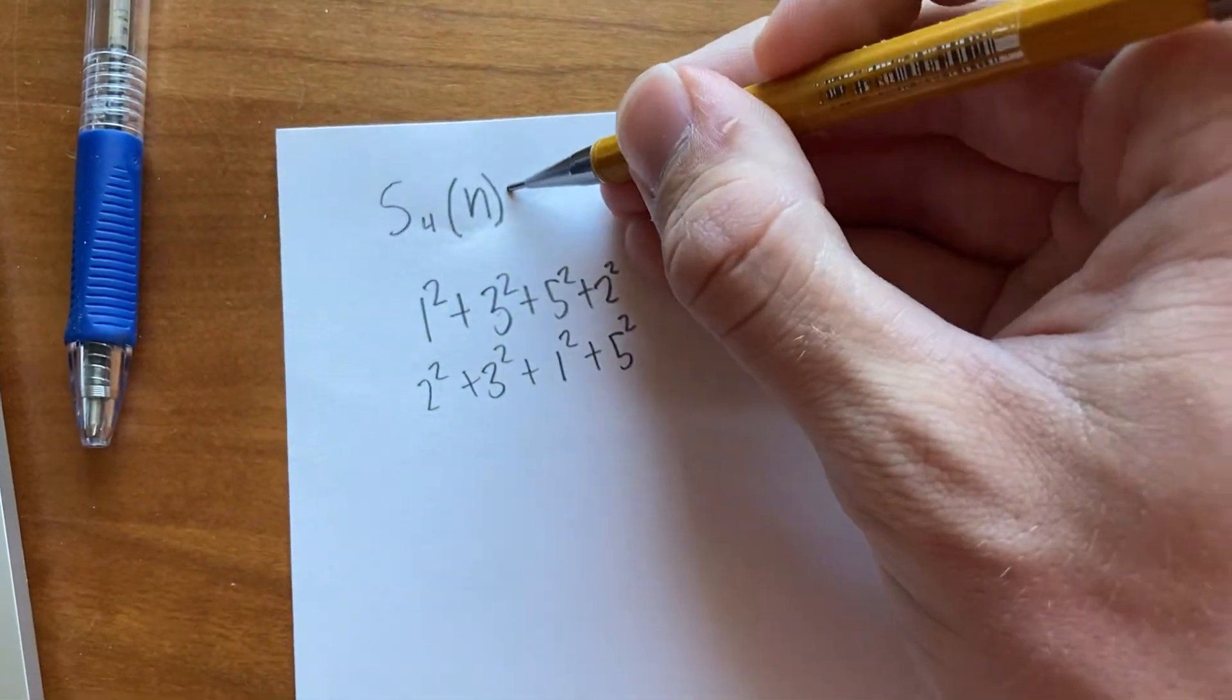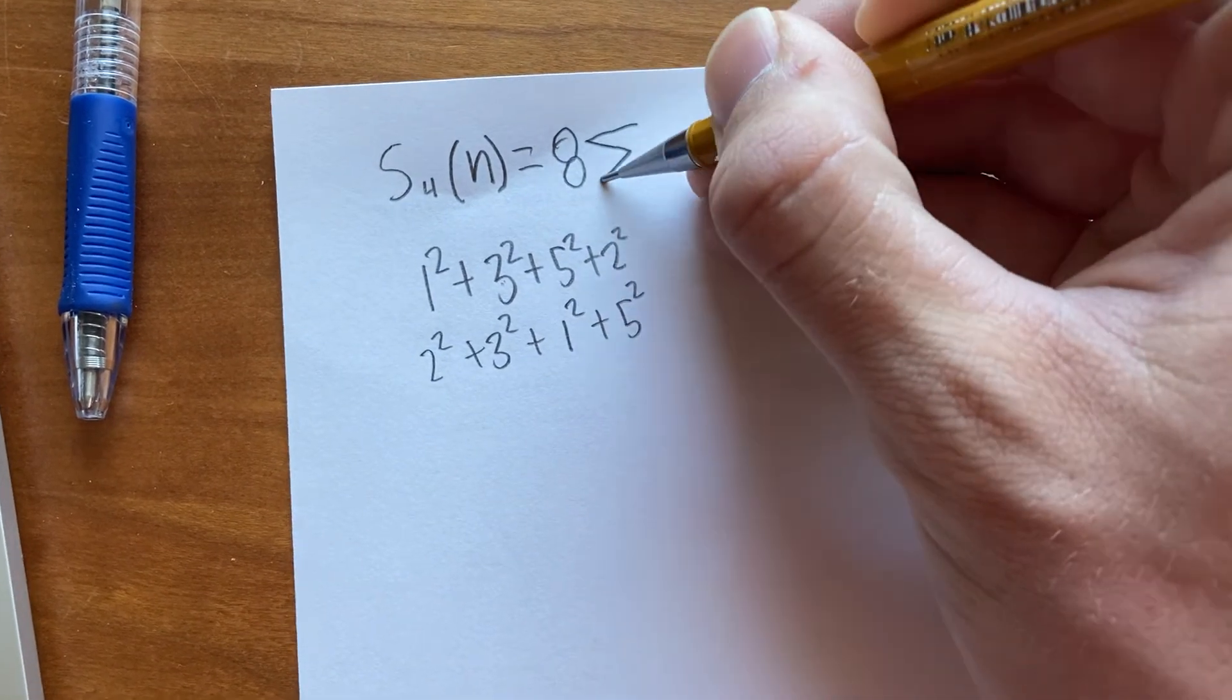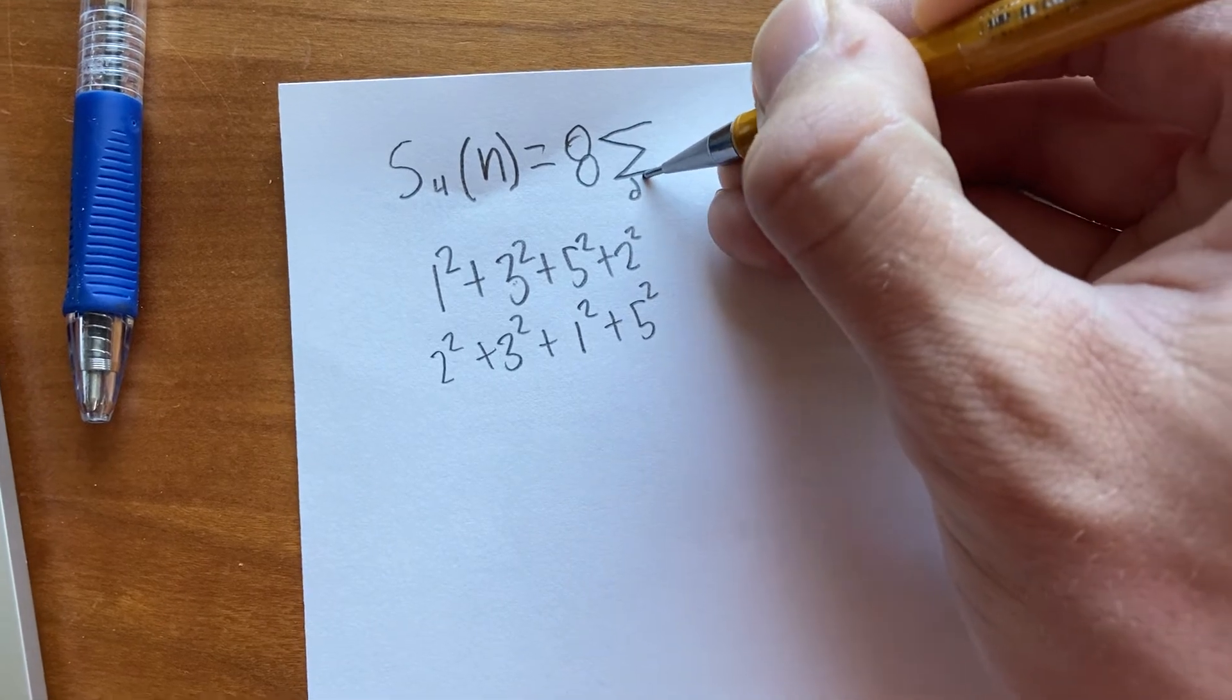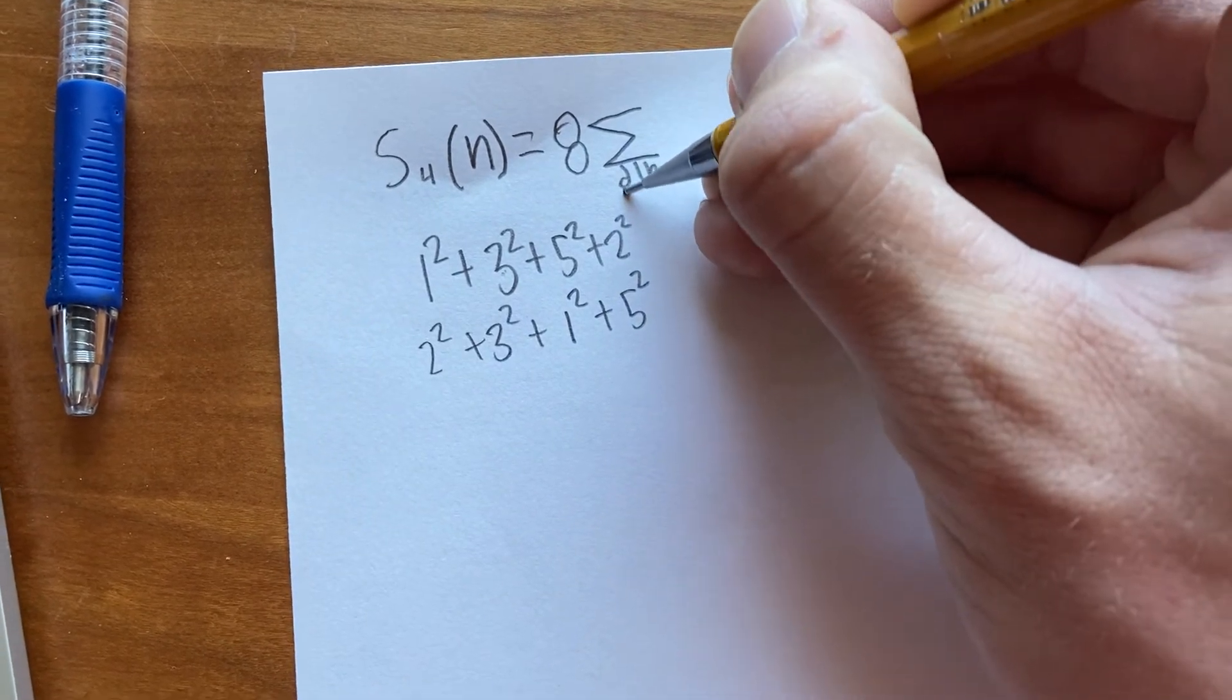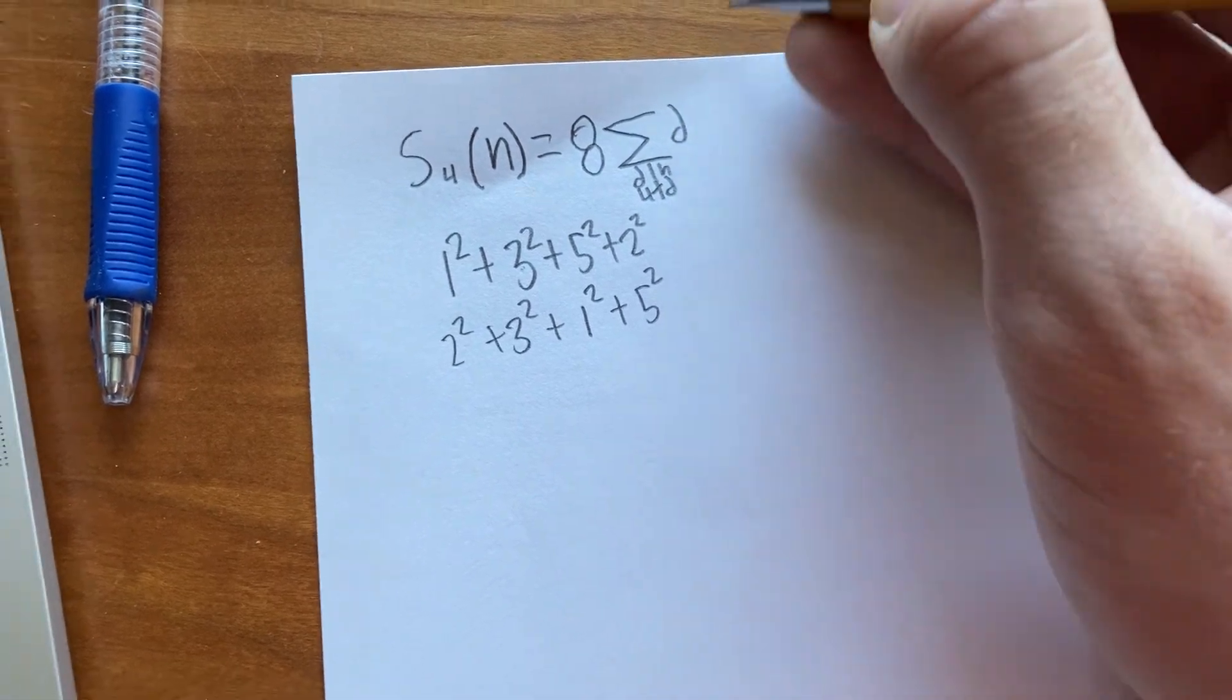Anyway, so the formula, which I just found, it's amazing how simple it is. You just take eight times the sum over all the divisors of n that are not multiples of four. And that's it.